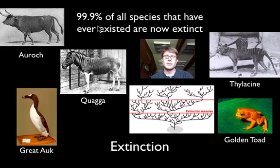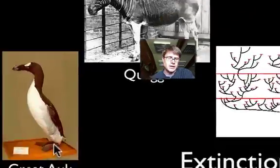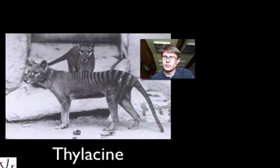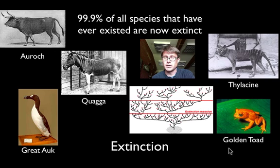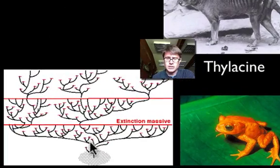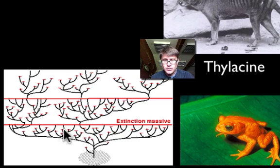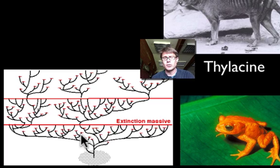The flip side is extinction. 99.9% of all species that have ever existed are now extinct. Recent examples include the auroch, the quagga, the great auk, the thylacine, and the golden toad — all extinct in the last few hundred years, many due to human pressure. On the tree of life, branch points represent speciation, while endpoints represent extinction: once the last organism of a species dies, those genes can no longer be passed on.